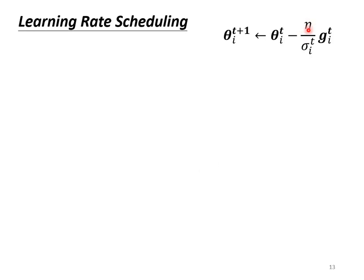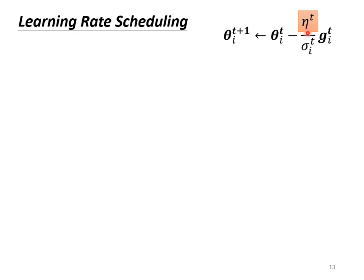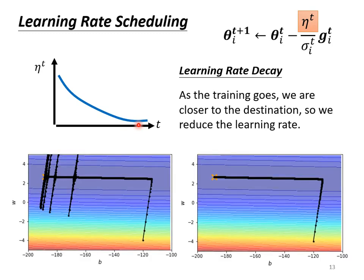What is Learning Rate Scheduling? We have a term α, which used to be a fixed value. Learning Rate Scheduling means α is associated with time — we don't treat it as a constant but make it time-varying. The most common strategy is Learning Rate Decay: as training proceeds and parameters are updated, we gradually reduce α's value. This makes sense because at the beginning of training we are far from the optimal point. As training proceeds, we get closer to our goal, so we pull the brakes by gradually decreasing α to slow down the parameter updating. After applying Learning Rate Decay, we can reach the destination smoothly.